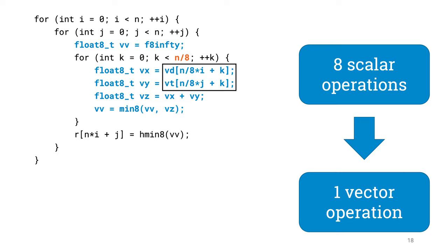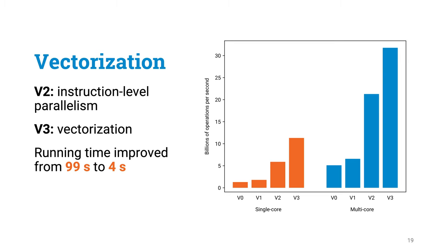We need to take care of packing our data into vectors in preprocessing, so that we can read our input with one vector read instead of 8 scalar reads. But once this is done, our code is pretty straightforward. Please note that we lost something — there is no instruction-level parallelism here anymore. All vector minimums depend on previous vector minimums. So if you want instruction-level parallelism, you need to again accumulate multiple vector minimums. But even if we don't bother to do that, the code already performs pretty well.